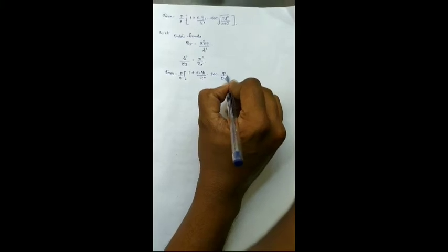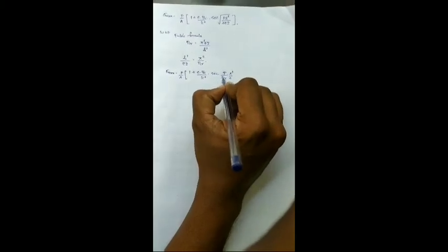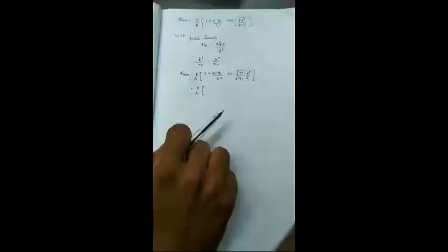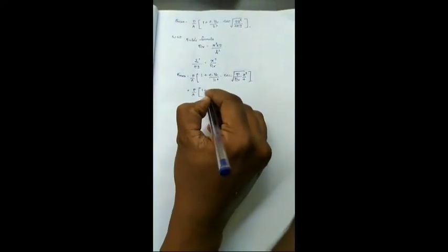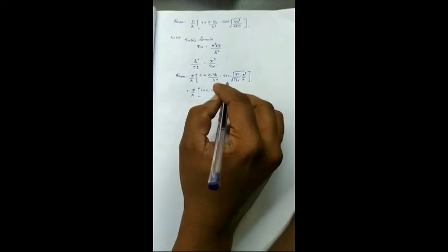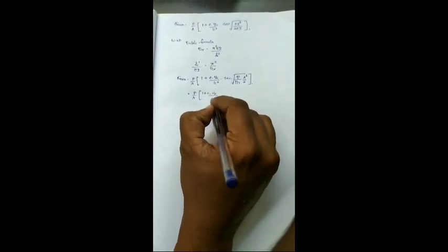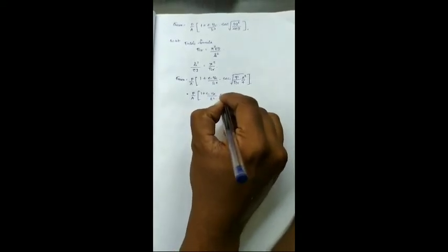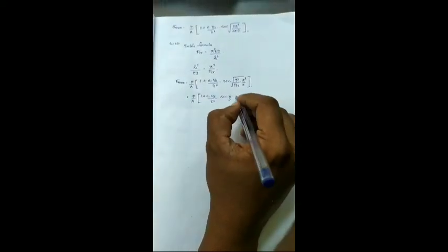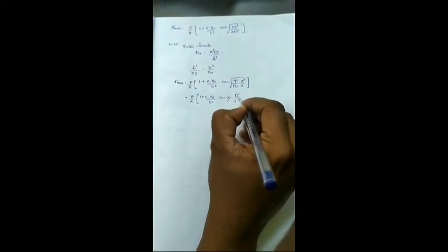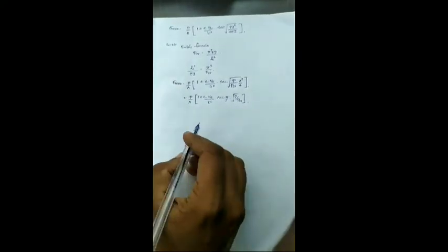Substituting, we get sigma max is equal to P by A into 1 plus e YC by K square secant P divided by P critical into root of pi square by 4. Right, again rearranging we get e into YC divided by K square secant pi by 2 root of P by P critical.